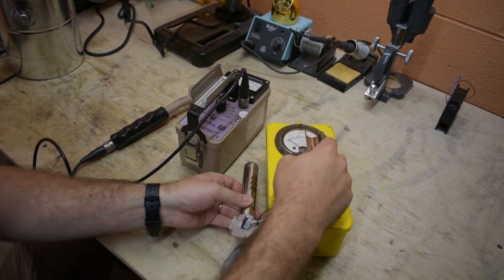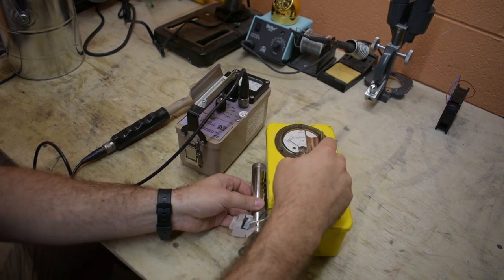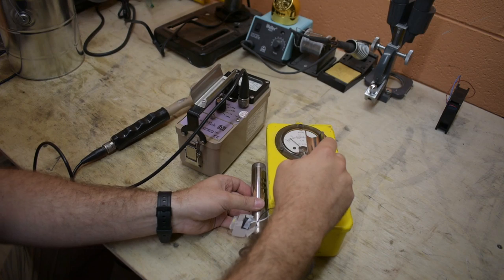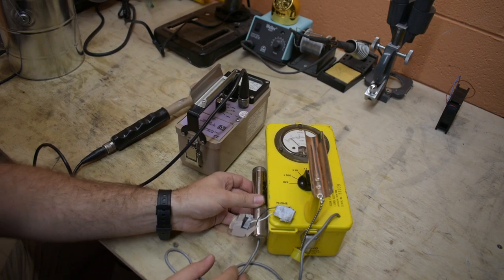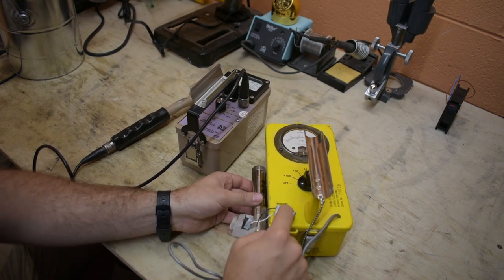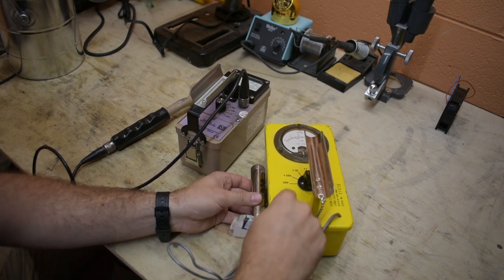So you can see this check source gives off beta radiation because with the window closed it can't detect it. If you open up the window it can once again detect it.